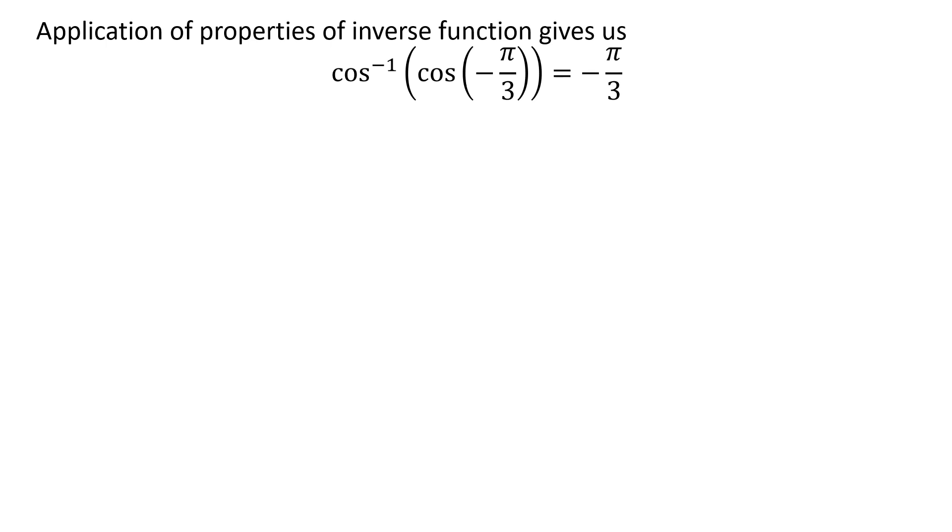As per the properties of inverse function, cos⁻¹(cos(-π/3)) is equal to -π/3.